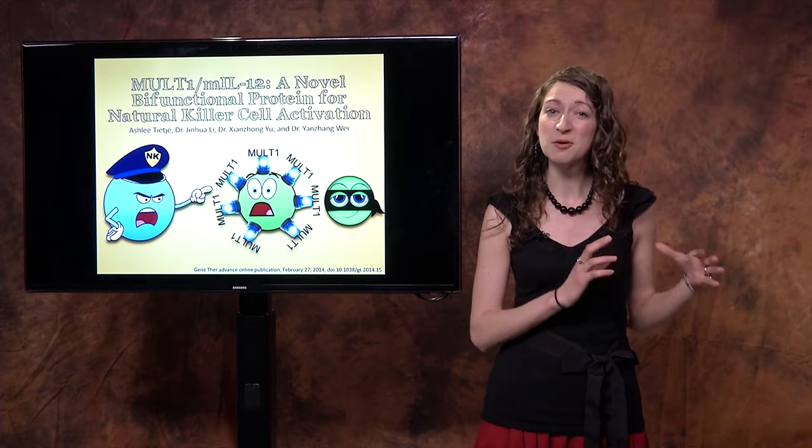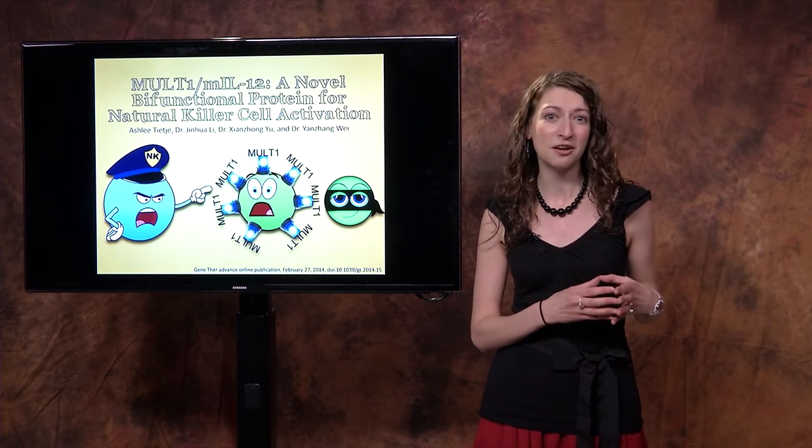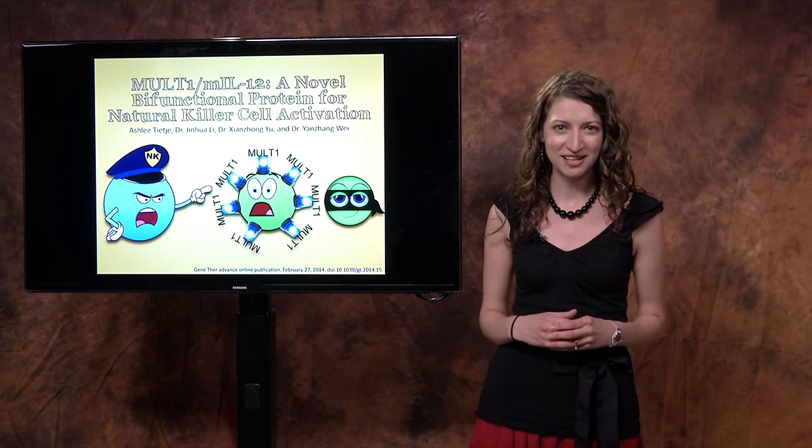We took healthy adult mice and injected them either with mouse lung cancer cells that don't produce our protein or mouse lung cancer cells that produce a whole lot of our protein. We gave the mice four weeks to grow, and then we took a look at their lungs.